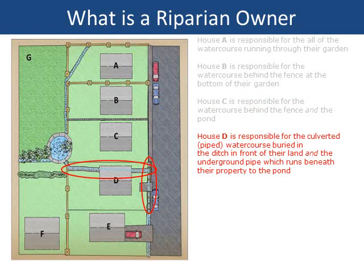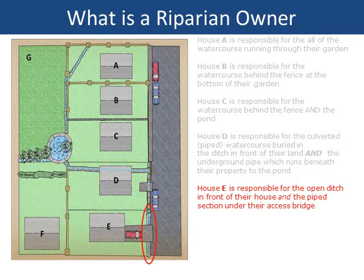House D is responsible for the piped, culverted watercourse buried in the ditch in front of their land, and the underground pipe which runs beneath their property to the pond. House E is responsible for the open ditch in front of their house, and the pipe section under their access bridge.